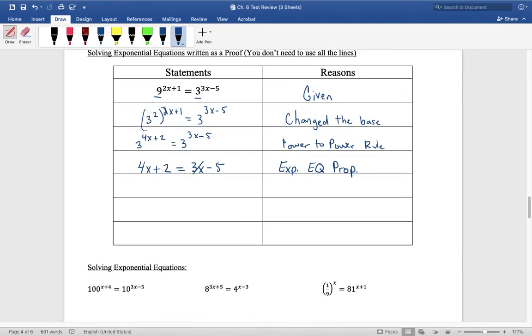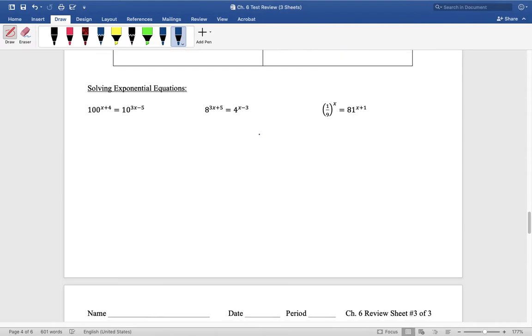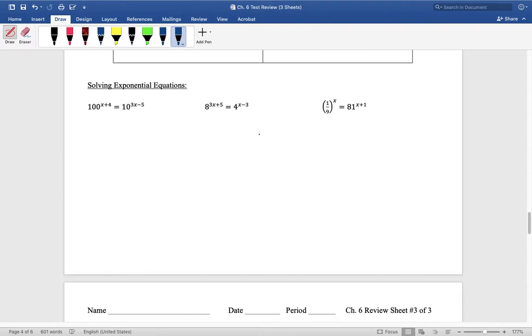Now we can just minus the 3x from this side, and that leaves an x over here. Minus the 2 from this side, cross it off, that leaves a negative 7 over there. What did I do? I did some addition and subtraction property. Moving down the page, exponential equations again, have to get the same base.